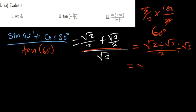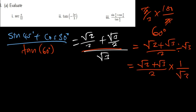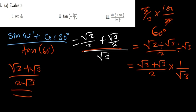So we have (√2 + √3)/2 multiplied by 1/√3, giving (√2 + √3)/(2√3). You can leave that as your answer, or you can go further and rationalize the denominator.